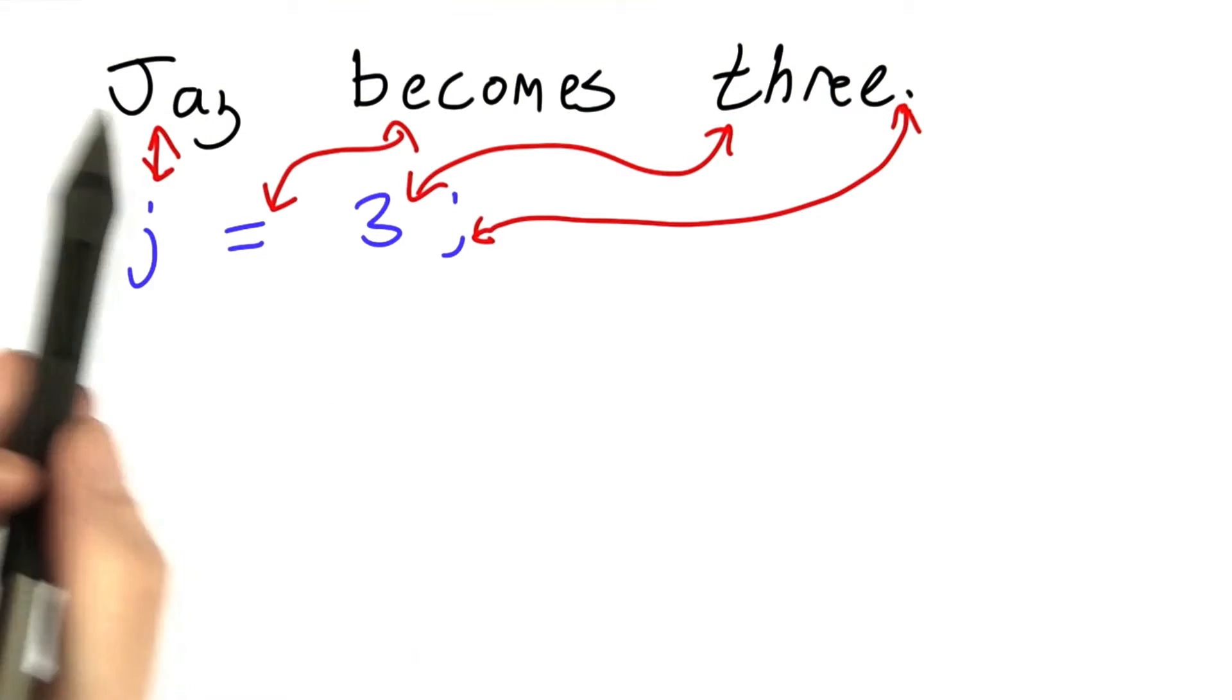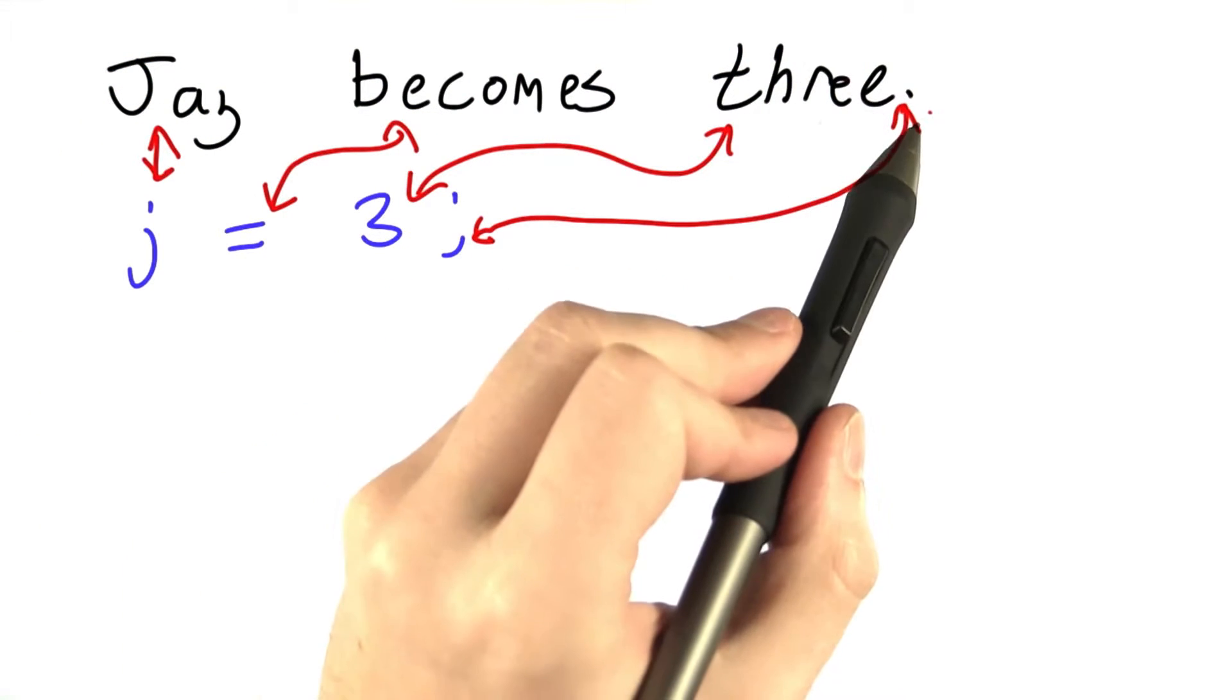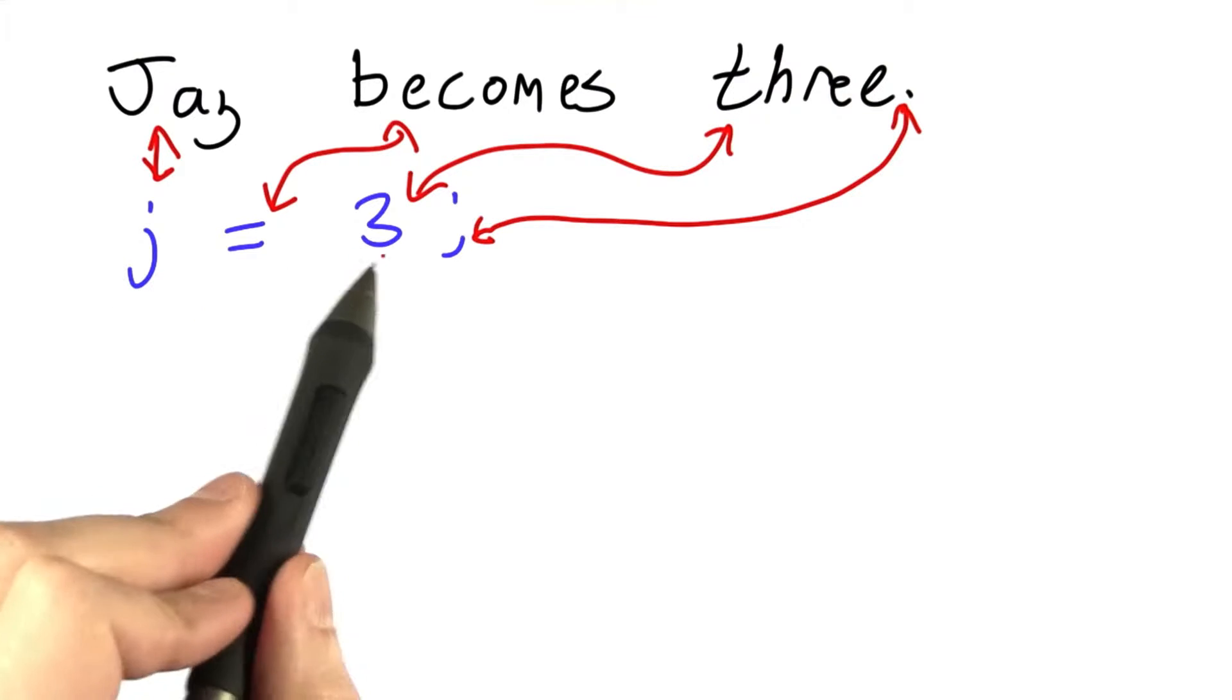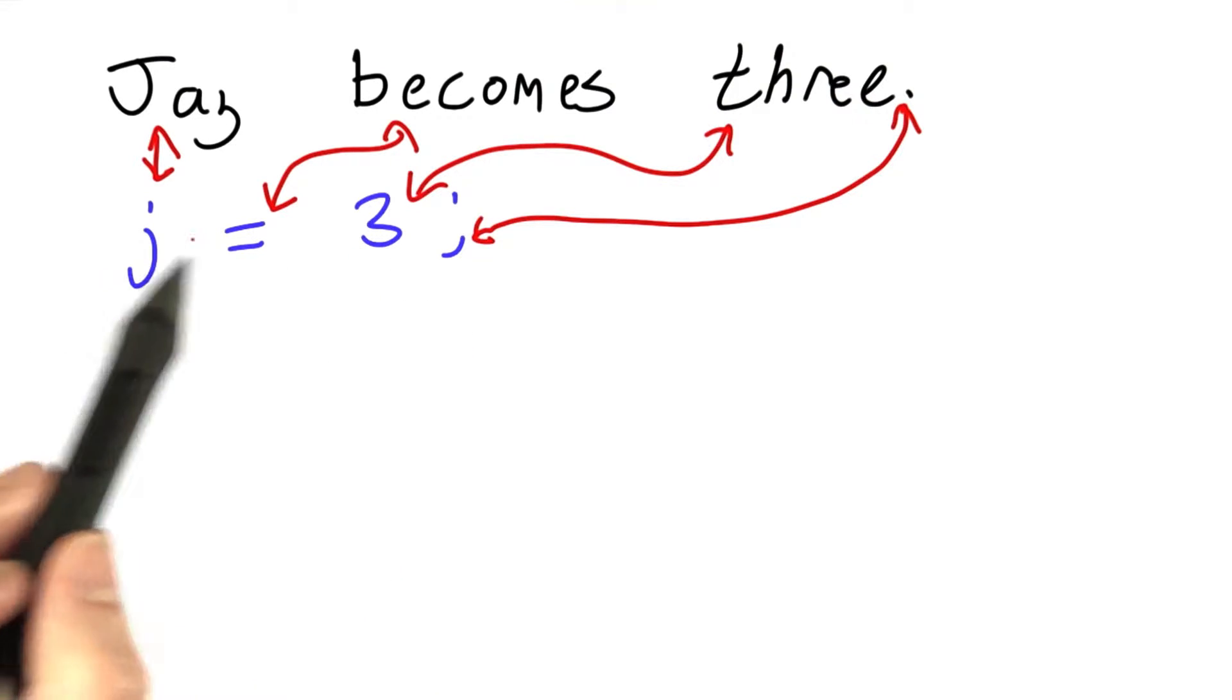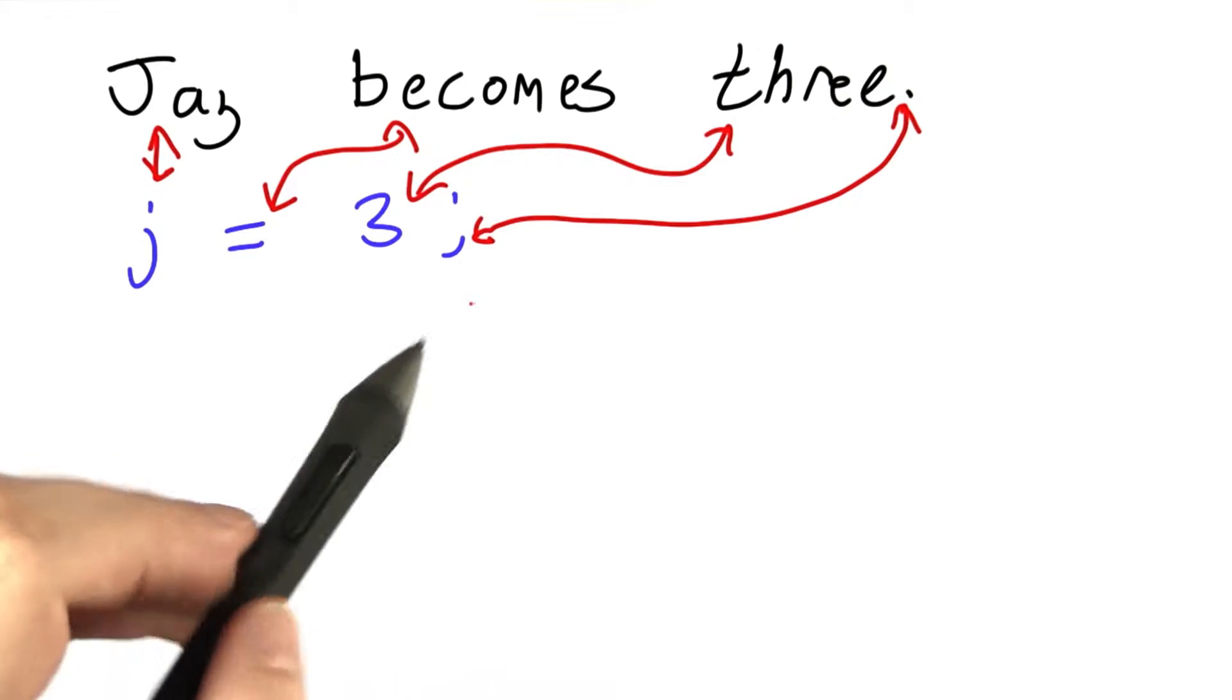The similarity between the syntactic elements, the subject, verb, object, and punctuation, and identifier, operator, expression, semicolon, is relatively direct.